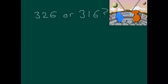So, when ordering numbers, you have to remember to partition the numbers first. So, let's start with 326. So, remember, we have three hundreds, two tens, and six units.